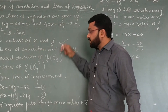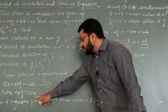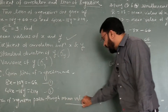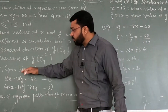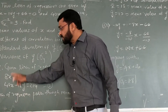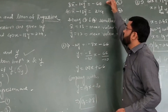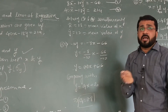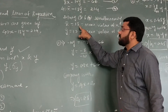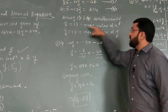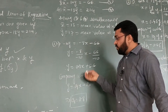One key property to remember: lines of regression always pass through the mean values x-bar and y-bar. So we replace x and y with x-bar and y-bar in both equations and solve them simultaneously. Solving gives x-bar equals 13 and y-bar equals 17, which are the mean values of x and y.